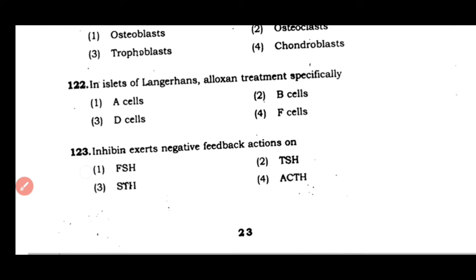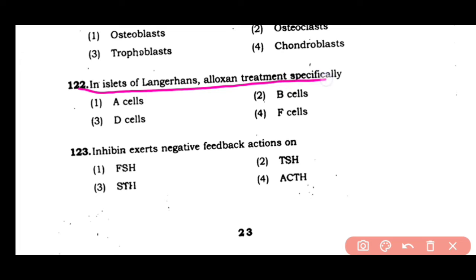Question number 122: In islets of Langerhans, alloxan treatment specifically destroys — (A) A cells, (B) B cells, (C) delta cells, (D) F cells. The correct answer is option B. Alloxan is a toxic chemical used to induce diabetes in experimental animals. It affects and destroys the B cells, so insulin production stops, and due to the stoppage of insulin, glucose level is increased.